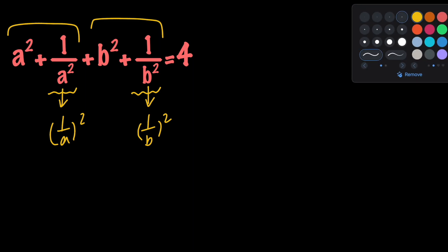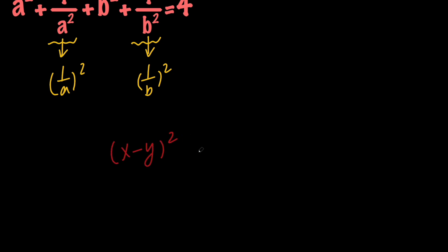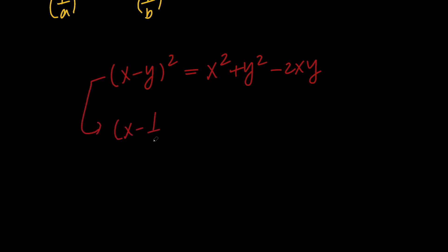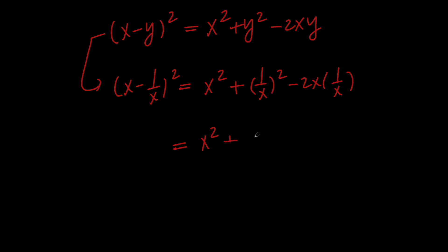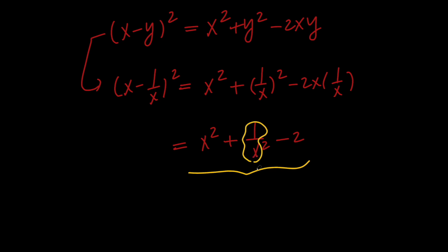We know that (x minus y) all squared equals x squared plus y squared minus 2xy, which indicates that (x minus 1 over x) all squared is the same thing as x squared plus (1 over x) squared minus 2x times 1 over x, which simplifies to x squared plus 1 over x squared minus 2. So notice that this is a perfect square, which means that if we have something squared plus the reciprocal of that thing squared, we can complete the square.